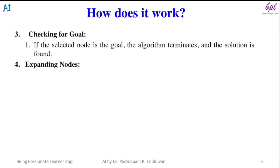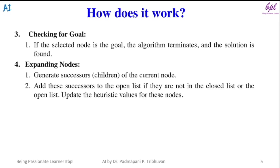Fourth step: expanding nodes. Generate successors or children of the current node. Add these successors to the open list if they are not in the closed list or the open list. Update the heuristic values for these nodes.